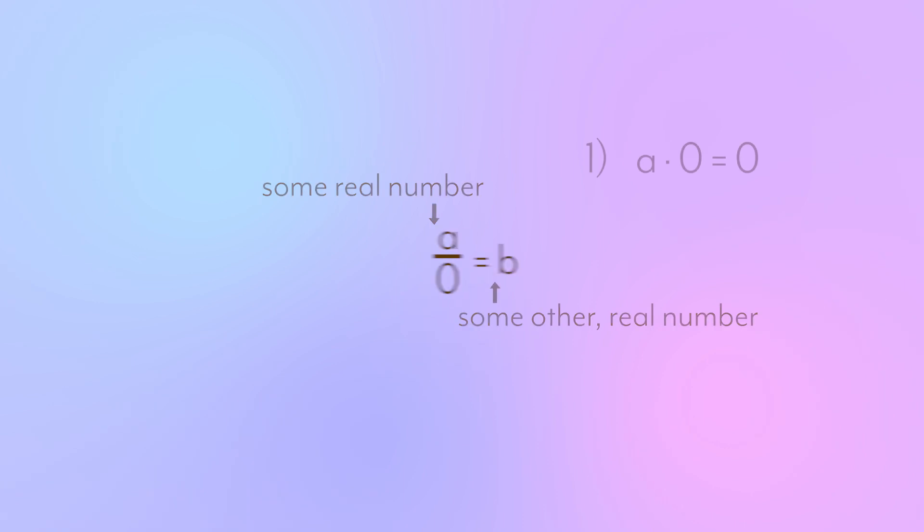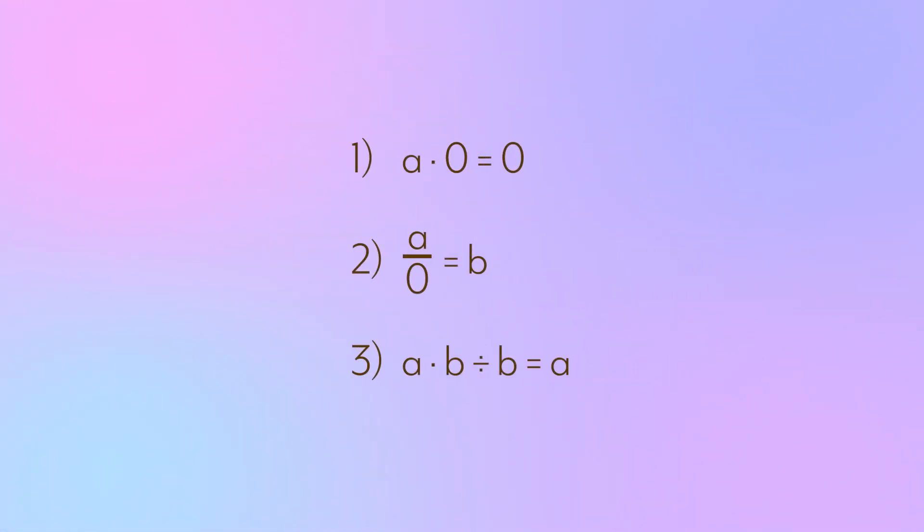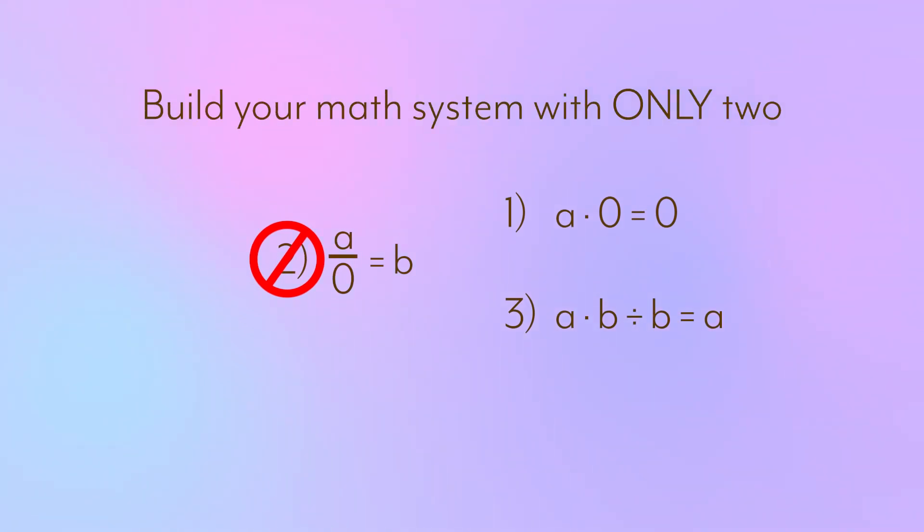The last thing we did was we said that if you multiply by a number and then divide by that same number, you get back to where you started. Making that a rule looks like a times b divided by b gets you back to a. Because we got to a contradiction, and we were really only using those three rules, we're going to have to deal with it. Because it's a contradiction, dealing with it means banning it.